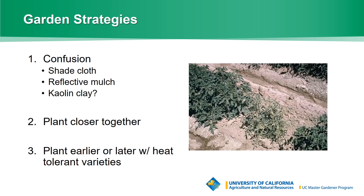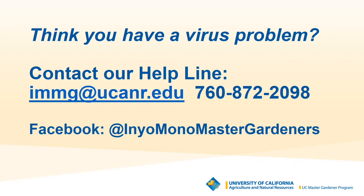Those are the three main viruses, though there are others around here. If you think you have a virus problem — individual plants here and there with unusual symptoms, or lots of thrips with weird stunting — contact our helpline. You can reach it at immg@ucanr.edu, or call the helpline at the phone number shown, or leave a message on Facebook at Inyomono Master Gardeners. Thanks for listening. I hope you found this helpful, and we hope you have good luck in the garden.